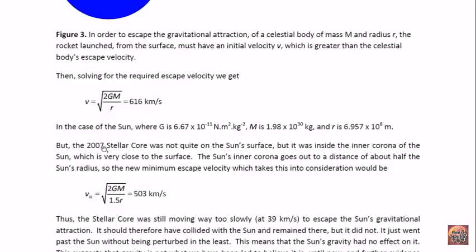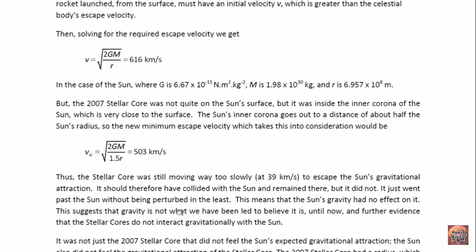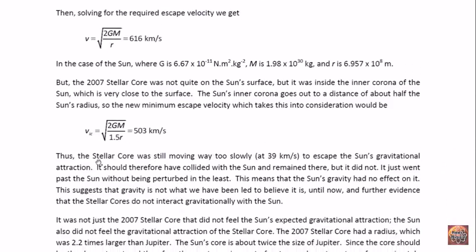Now, the 2007 stellar core was not quite on the sun's surface, but it was inside the inner corona of the sun, which is very close to the surface. The sun's inner corona goes out to a distance of about half the sun's radius. So the new minimum escape velocity, which takes this into consideration, would be at the edge of the inner corona, where instead of r, we use 1.5 r. And then the new escape velocity is 503 kilometers per second. It is still way above what the speed of the stellar core was at 39 kilometers per second.